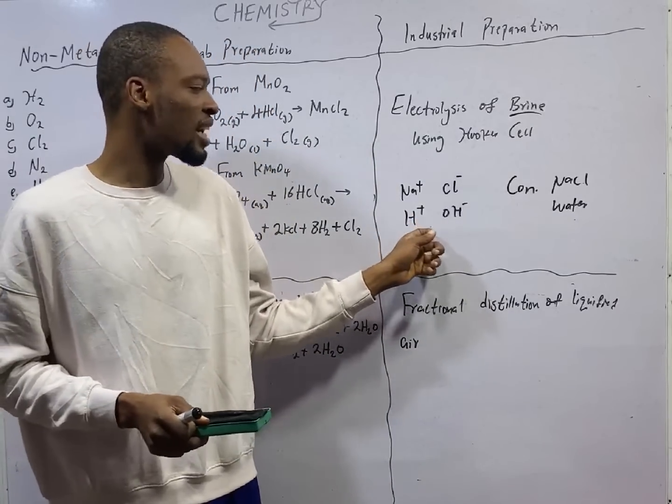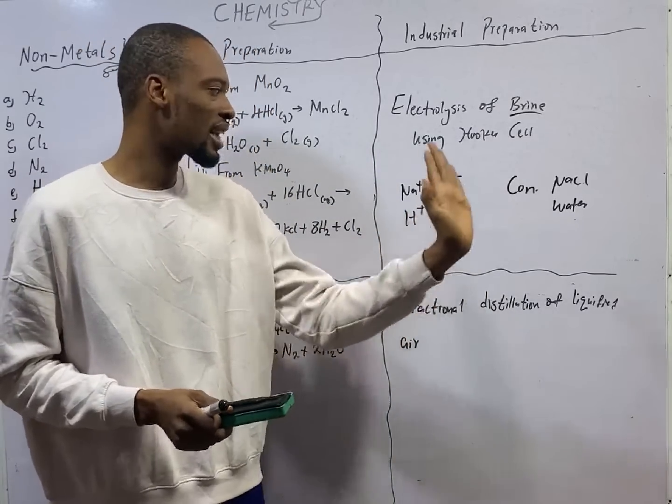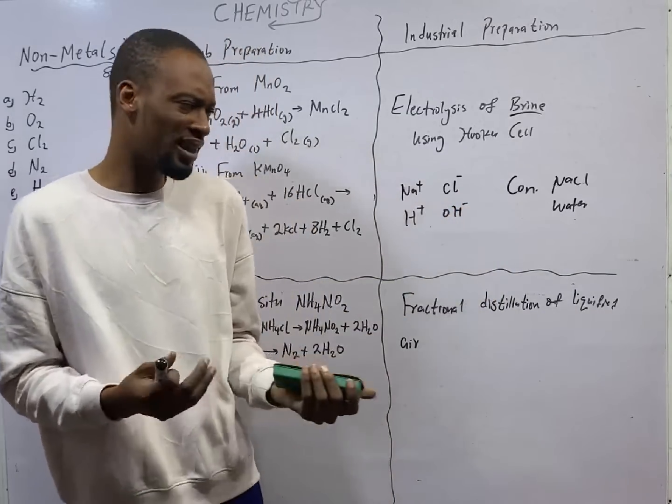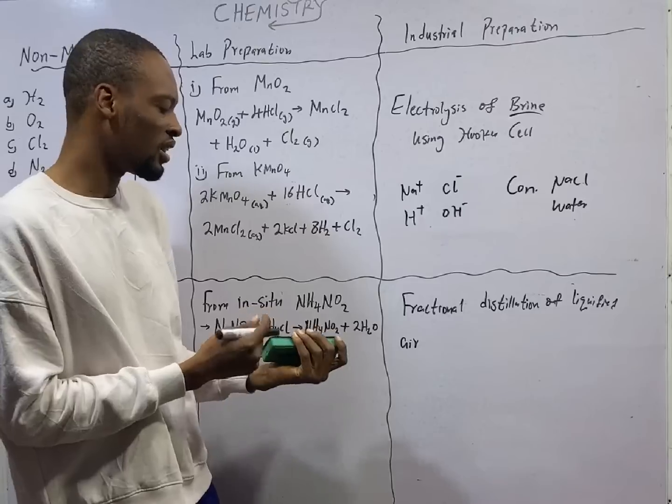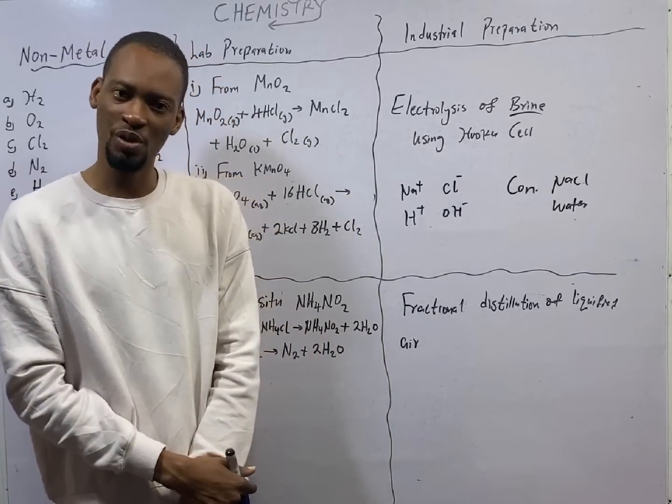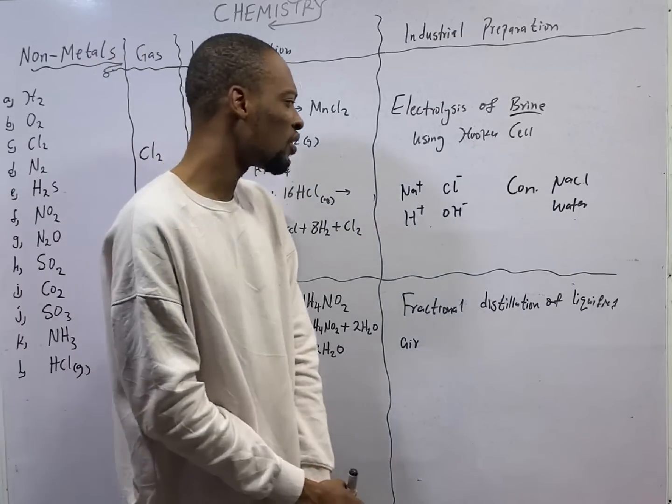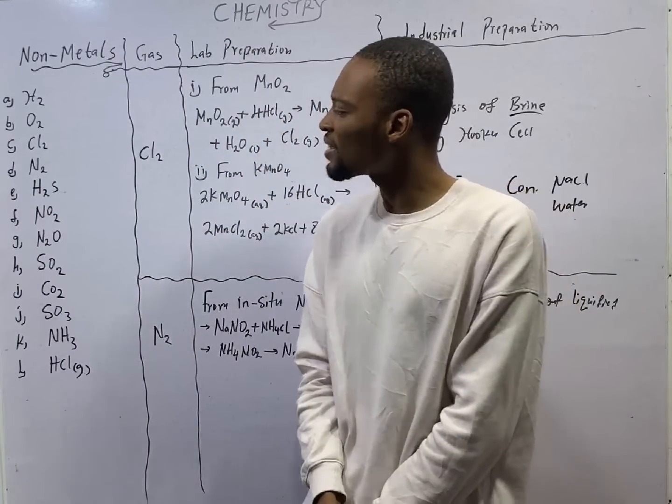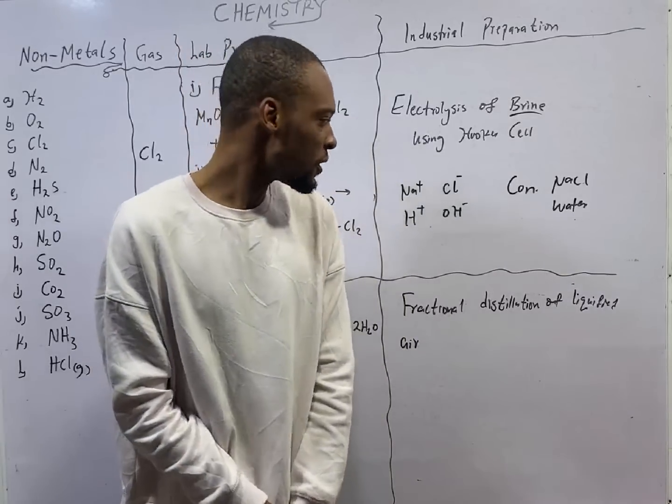Sodium ion and hydrogen ion will migrate to the cathode, chloride ion and hydroxide ion will migrate to the anode, then preferential discharge comes into consideration. Whenever more than one ion migrates to an electrode, preferential discharge will come into play.